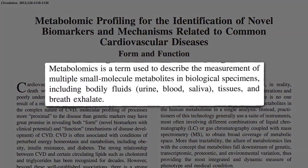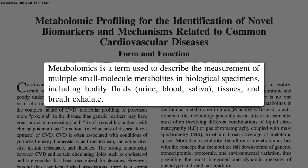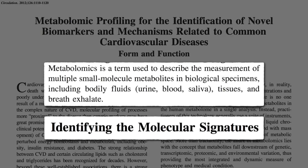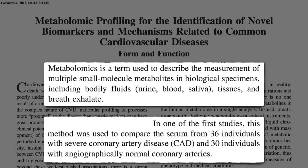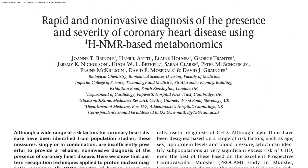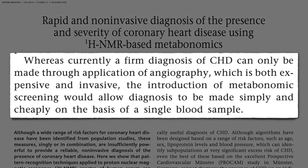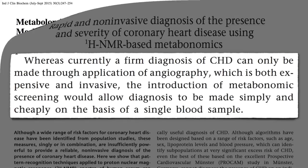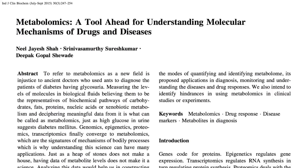Metabolomics is a term used to describe the measurement of multiple metabolites in biological specimens, like bodily fluids, with a goal of identifying molecular signatures. For example, if you compare the metabolic profile of those with severe heart disease to those with clean arteries, maybe we could come up with a cheap, simple, non-invasive way to screen people. If heart patients happen to have something in their blood that healthy people didn't, we could test for that, and maybe it would even help us understand the mechanisms of disease.